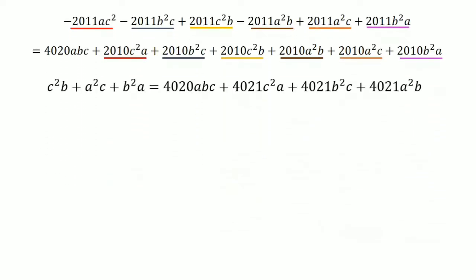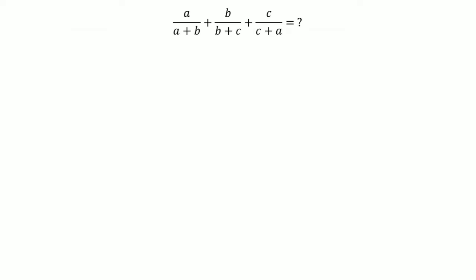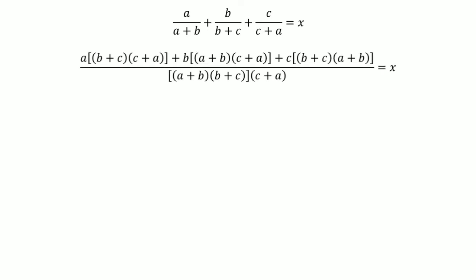Now we need to find our target expression, which is the simplified form of our required information. Let this expression equal X. After taking the common LCMs we get a combined fraction, which looks quite complicated, and it looks even more complex when you see all the nested parentheses needed to reach our required information.